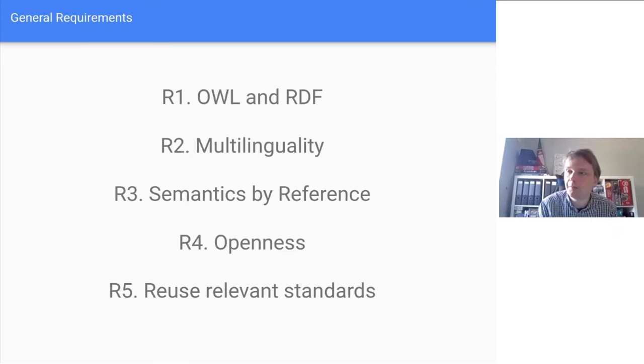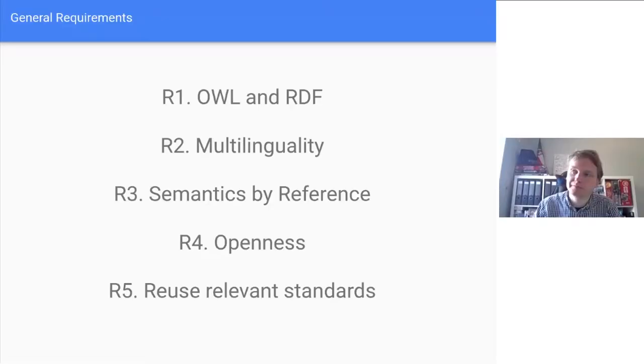We highly prized openness, which has two meanings. First, it's open in the sense that it's free — as in free speech — you don't have to pay money to download it, and anyone can contribute. But it's also open in the sense that it's a flexible, extensible model that doesn't try to limit what you can represent — you can build it as you wish. Finally, we wanted to reuse relevant standards. There's always a danger of not-invented-here syndrome, always reinventing the wheel. We wanted to use existing models and everything that was already there as well as we could.